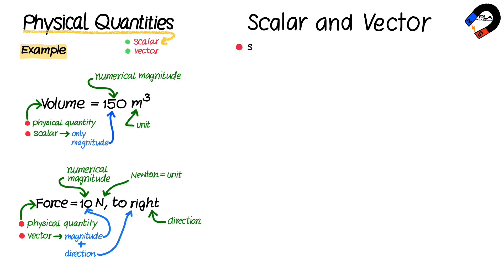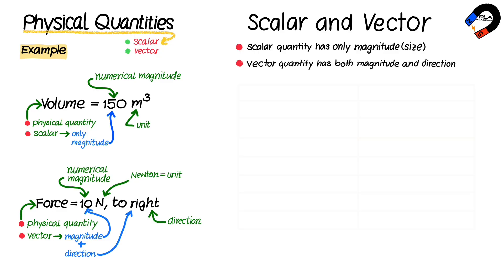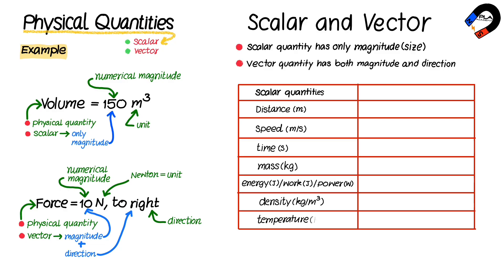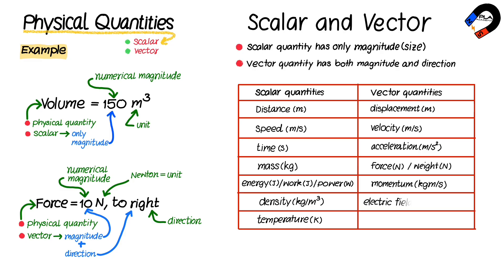The force is a vector quantity because it has both magnitude and direction. A scalar quantity has only magnitude, which is a numerical value. A vector quantity has both magnitude and direction. Some scalar quantities include distance, speed, time, mass, energy, work, power, density, and temperature. Some vector quantities include displacement, velocity, acceleration, force, weight, momentum, electric field strength, and gravitational field strength.